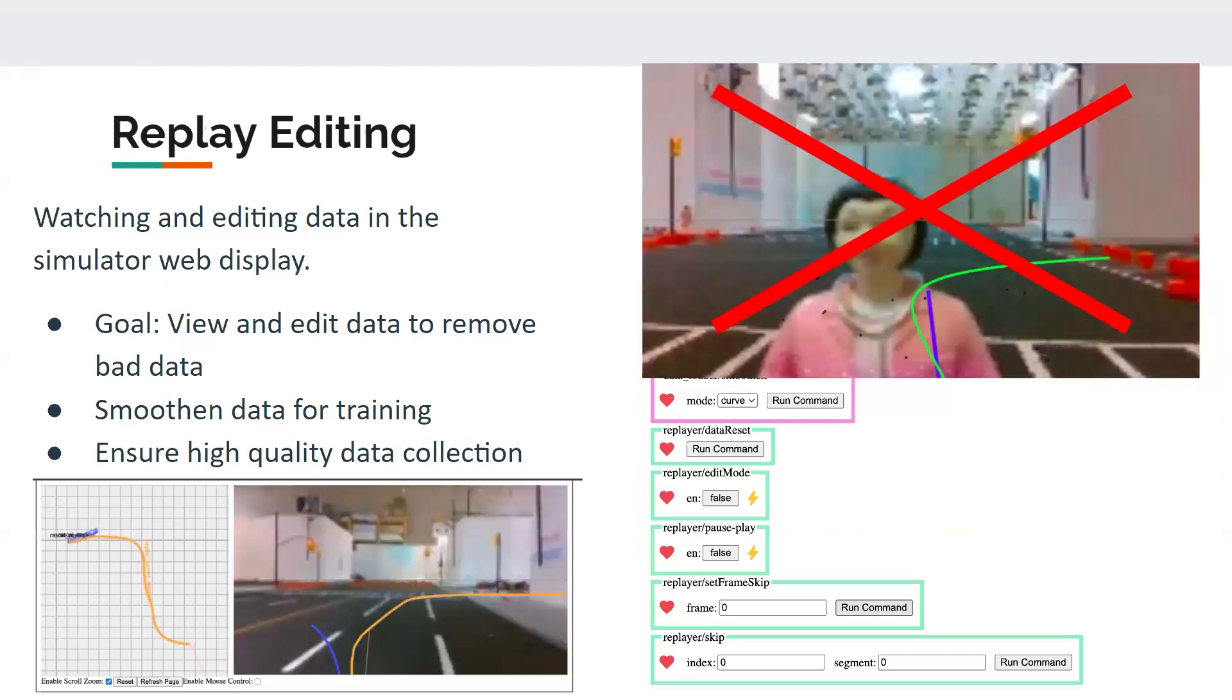Replay editing. In order to actually view the data that we collect, we create a simulator that we open up on a web display, which allows us to not only view the data, but we can change the speed of it when viewing, as well as actually edit the data and remove any bad data. And this allows us to get higher quality data, and then we can also smoothen the data for training.